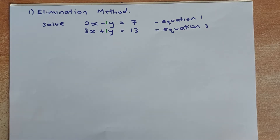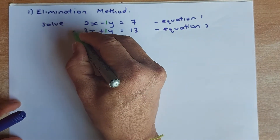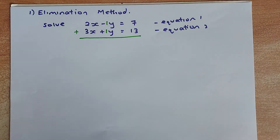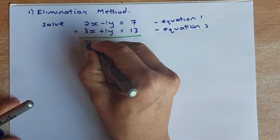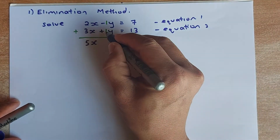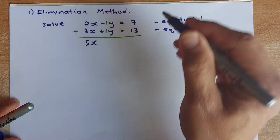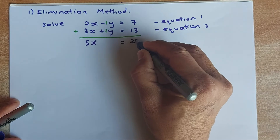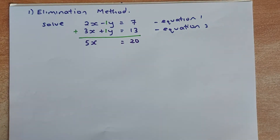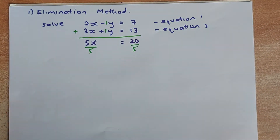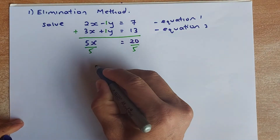To do that, we either add or subtract the whole of equation 1 and equation 2. Suppose we do addition. When we add the equations, 2X plus 3X becomes 5X. Minus Y plus Y — they will be eliminated, cancelled out. And 7 plus 13 is 20. Then to get rid of the 5, you divide by 5, and you have solved for X. So X equals 4.